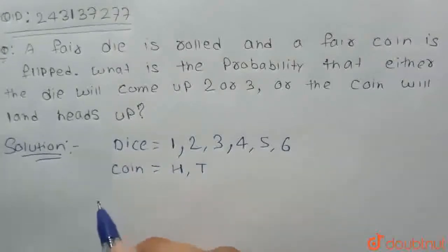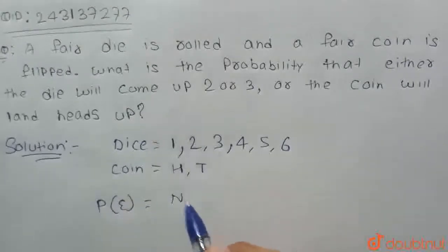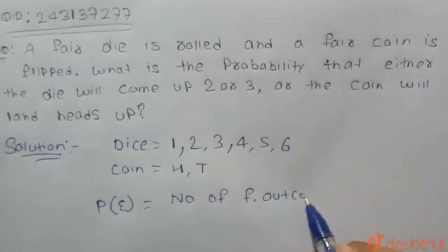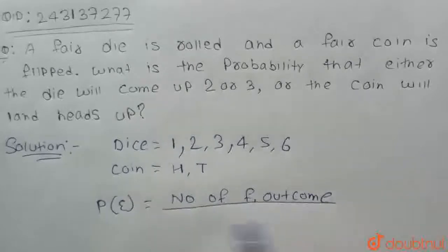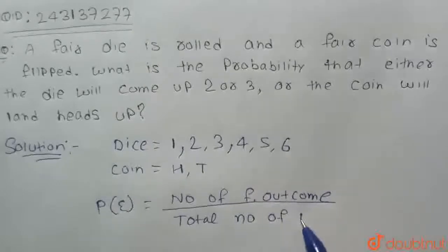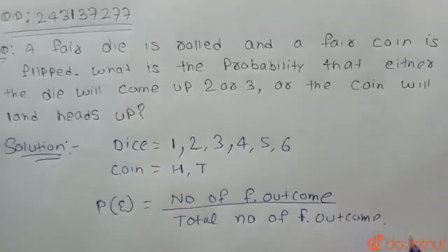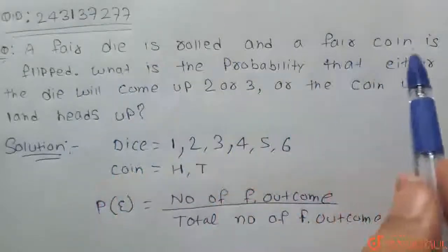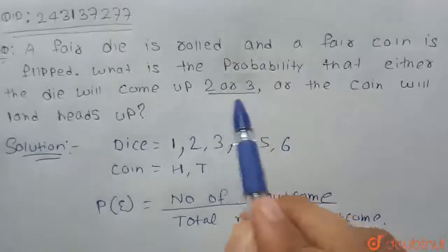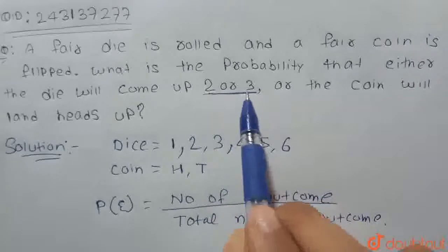So according to the probability formula, the probability of an event is equal to the number of favorable outcomes divided by the total number of outcomes. As we have given, a fair die is rolled and a fair coin is flipped. So what is the probability that either the die will come 2 or 3? That means there is a chance it may become 2 or it may become 3 — so this is one possibility.